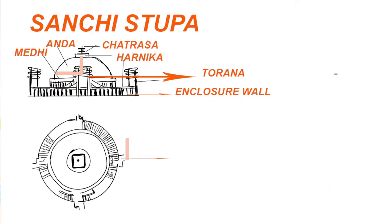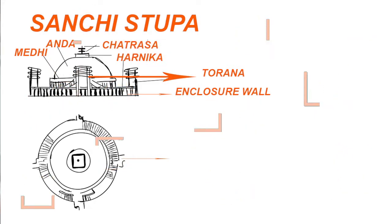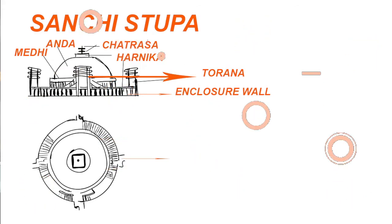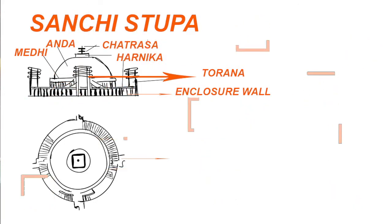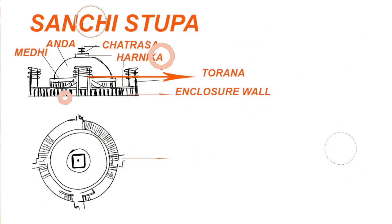The Torana was also a replication from Vedic architecture, because Toranas were found in Vedic villages marking the entrance of a village. If you look at the plan and trace where the four Toranas end — skipping the circle in the middle — they form a Swastika. This is how they used to plan the Stupa layout.